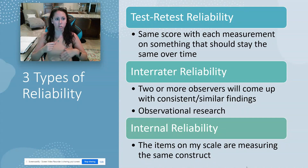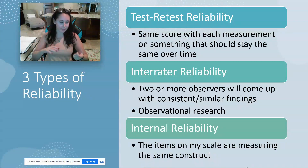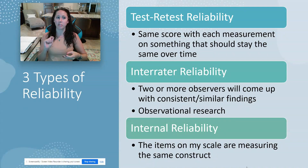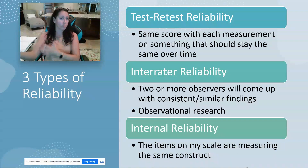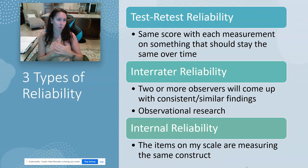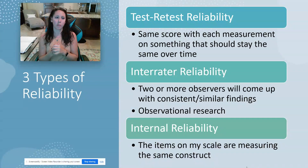If I'm trying to observe indicators of frustration in a couple arguing — say I have a list including raised tone of voice, sarcastic comments, personal insults, aggressive body language, leaning forward, clenching fists — and I give my researchers that list to code from, but one picks up 42 indicators of frustration and the other picks up only three, that's not good inter-rater reliability. So for observational research, you never want to have one researcher doing the coding with no form of checking, because it can be hard to establish reliability that way.